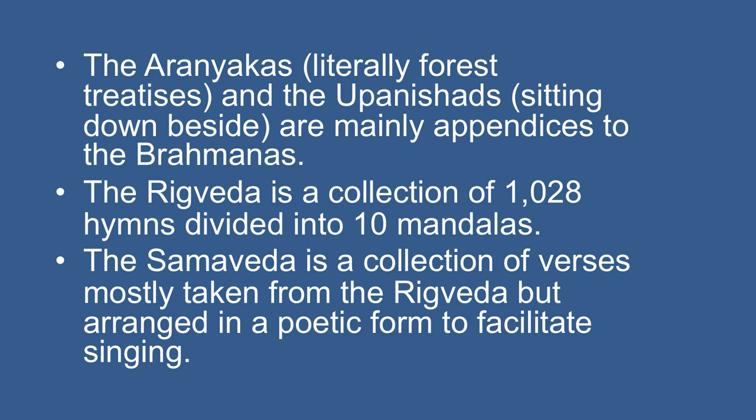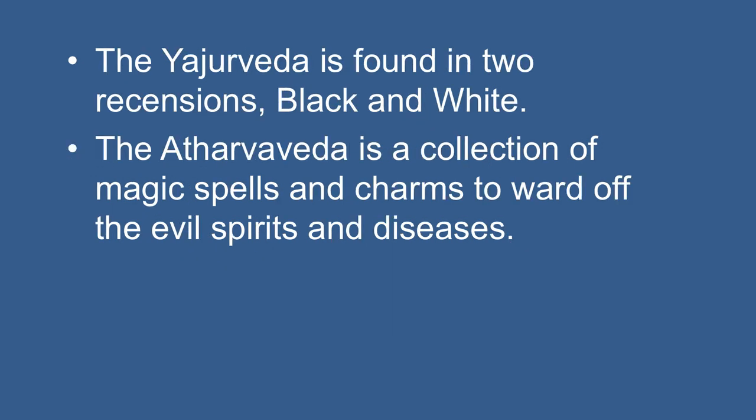The Rig Veda is a collection of 1028 hymns divided into 10 mandalas. They are the earliest compositions and hence depict the life of the early Vedic people in India. The Sam Veda is a collection of verses mostly taken from the Rig Veda but arranged in poetic form to facilitate singing. The Yajur Veda is found in two recensions — black and white — and is full of rituals to be performed publicly or individually. The Atharva Veda is a collection of magic spells and charms to ward off evil spirits and diseases. Studies have shown that the Vedic texts reflect two stages of development in literature as well as social and cultural evolution, with the Rig Veda reflecting one stage and the other three Vedas reflecting another.